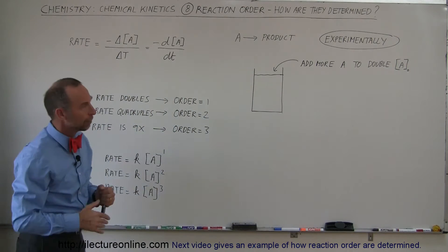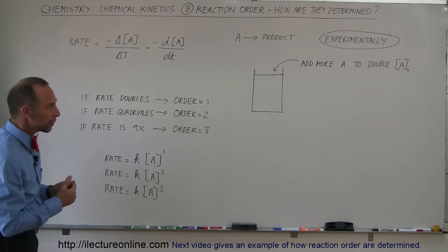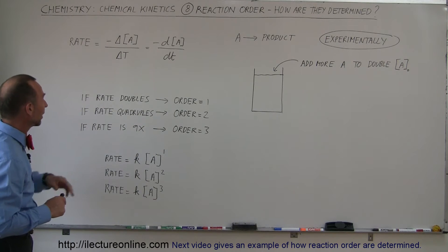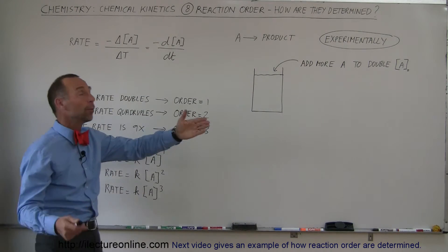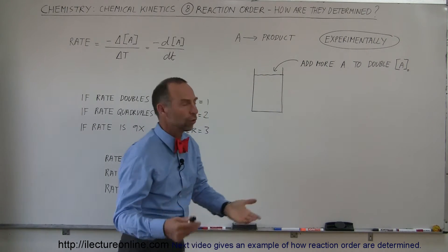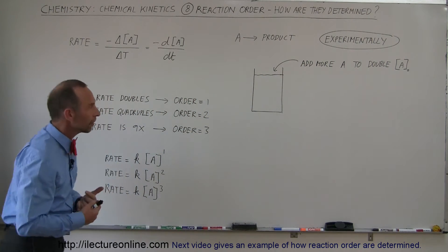There's no way to predict by looking at the equation, by looking at the reaction, how to figure out the reaction order. So let's say we have a reaction, a very simple one. We have a single reactant that produces some sort of product by disassociating or reacting with something else.